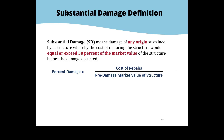The specific definition for substantial damage means damage of any origin sustained by a structure whereby the cost of restoring the structure would equal or exceed 50% of the market value of the structure before the damage occurred. You're looking at pre-damaged market values of the structure. The term 'any origin' is important — it's not just flooding; it can be pretty much anything that causes damage to the structure.